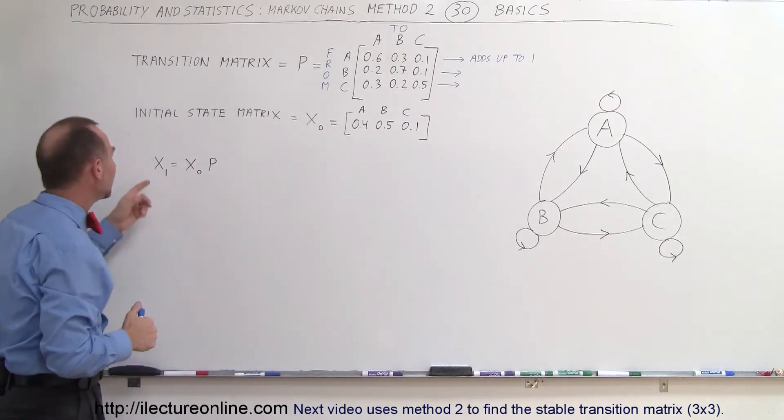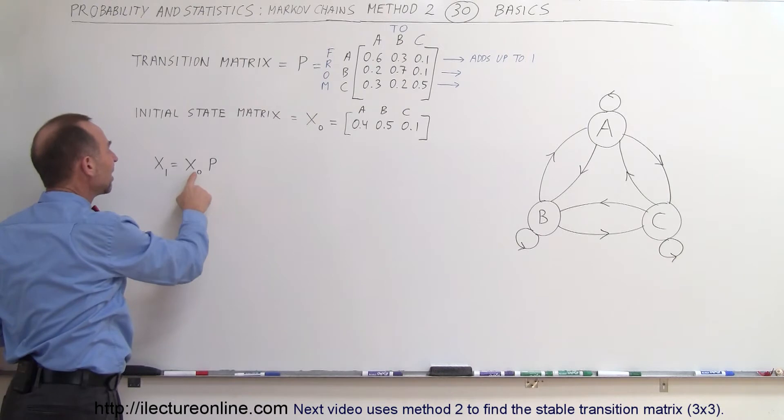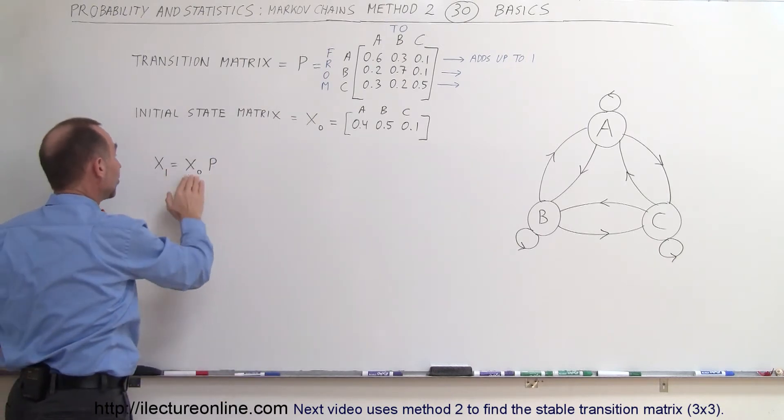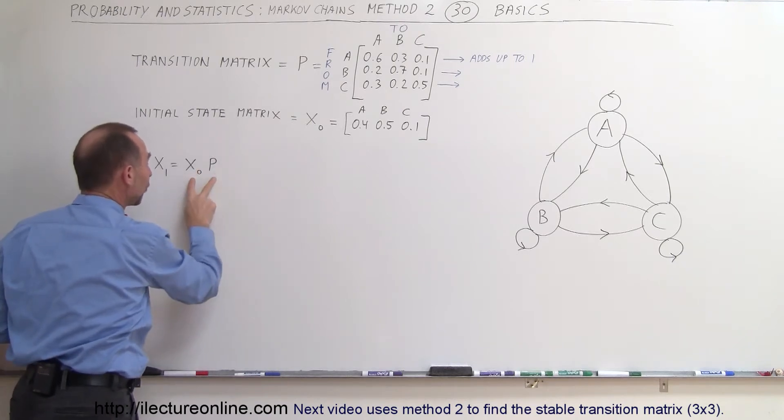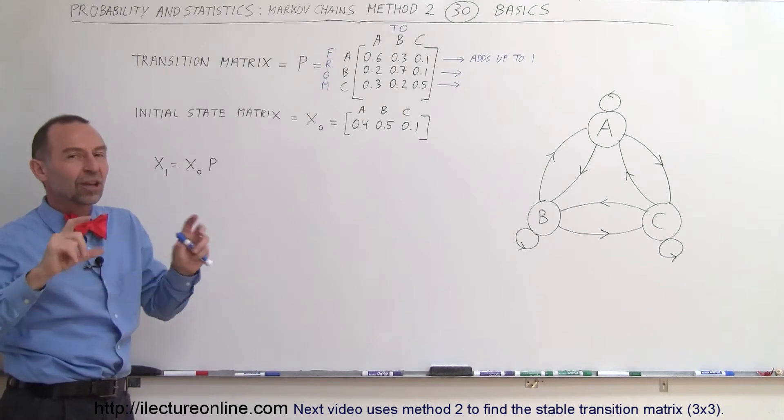So then when you try to calculate the next state X sub 1 you multiply the initial state times the transition matrix not the way it was done before where it was a transition matrix times initial state matrix. So we have reversed the order of the matrices and we have to do that because of the shape of the matrix.